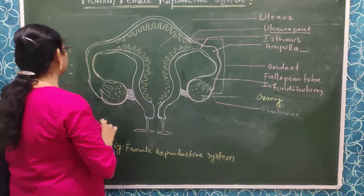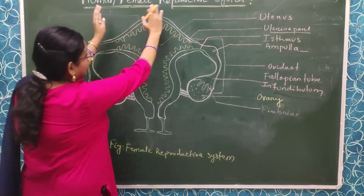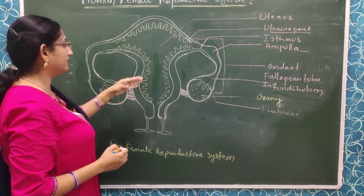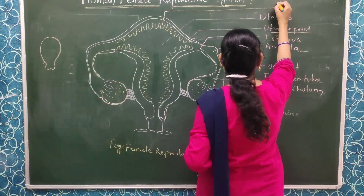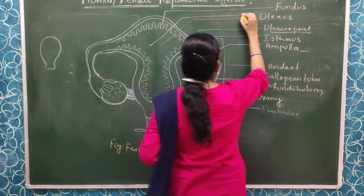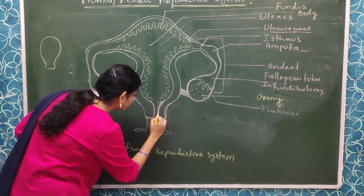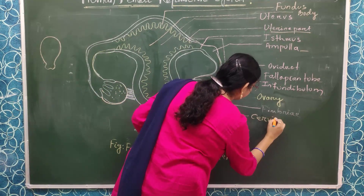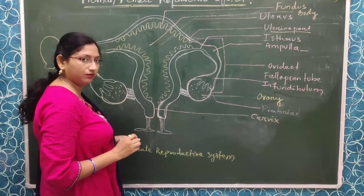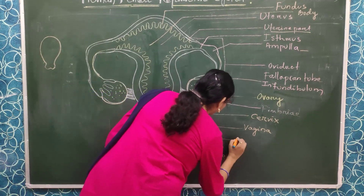The inverted pear-shaped structure is called the uterus. The uterus has the following parts: the upper part is called the fundus; the middle part is called the body of the uterus; and the lower narrow canal-like part is called the cervix. Lower to the cervix is the vagina, and lower to the vagina is the opening called the vaginal orifice. The vagina opens in both directions — internally towards the cervical canal, which is called the internal OS.